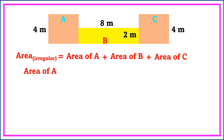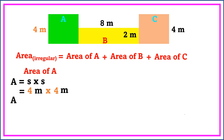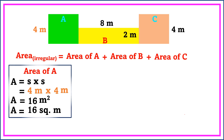Let's solve the area of A, which is in the shape of a square. We're going to use the formula: side times side. The side is 4 meters times 4 meters. 4 times 4 is equal to 16 square meters. This is the area of figure A.